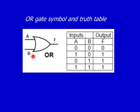This is the OR gate with two inputs and one output. When either one or both of the inputs are on, then the output is on. As you can see from the truth table here, the only time there is no output is when both inputs are off.